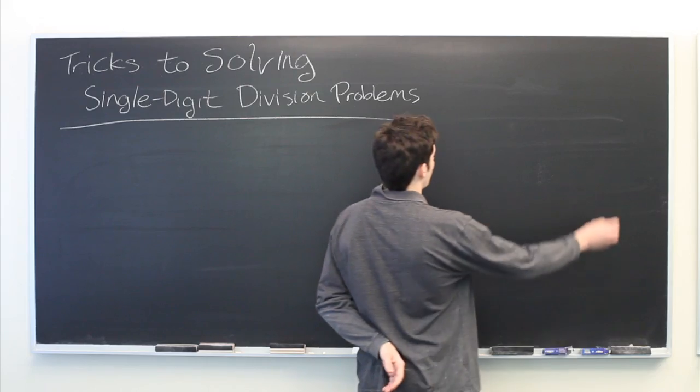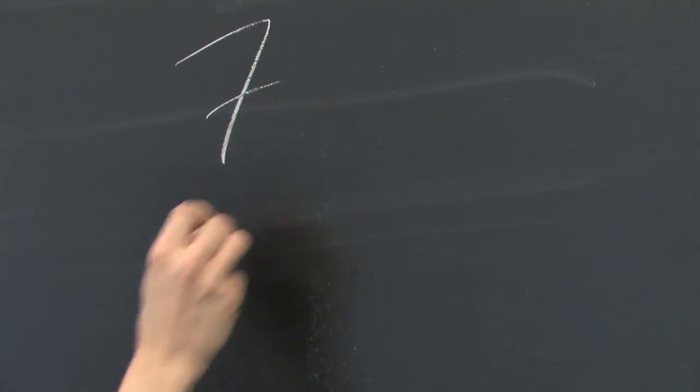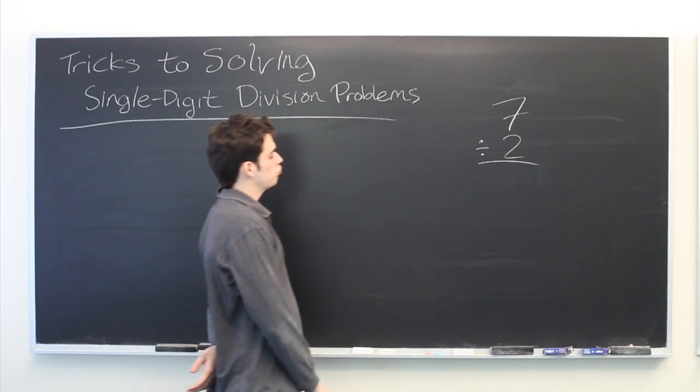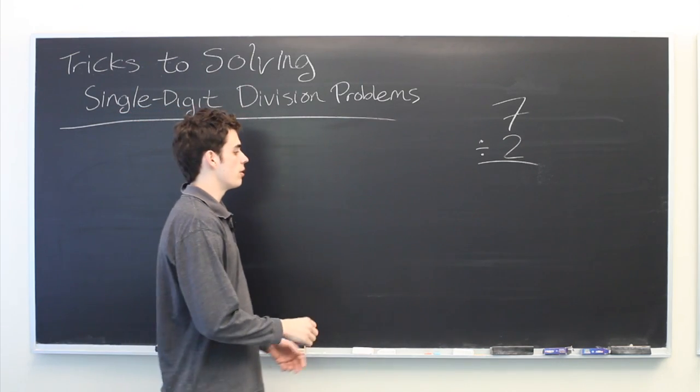So let's suppose that we're given a problem like 7 divided by 2. There are plenty of tricks that one can use to do this.